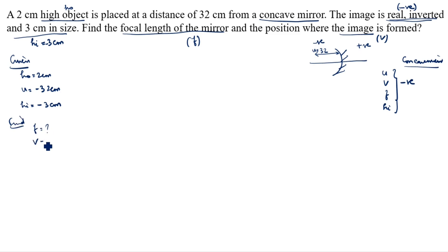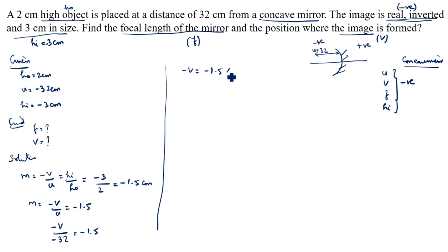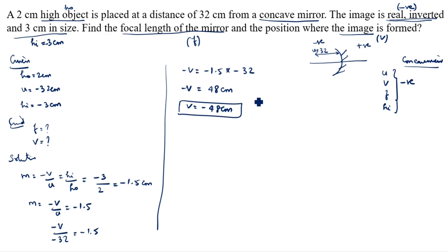We need to find focal length and V, the image position. The formula of magnification is: M equals minus V by U, which also equals HI by HO. HO and HI are given. HI is minus 3, HO is 2, so HI by HO gives minus 1.5. So M equals minus V by U equals minus 1.5.